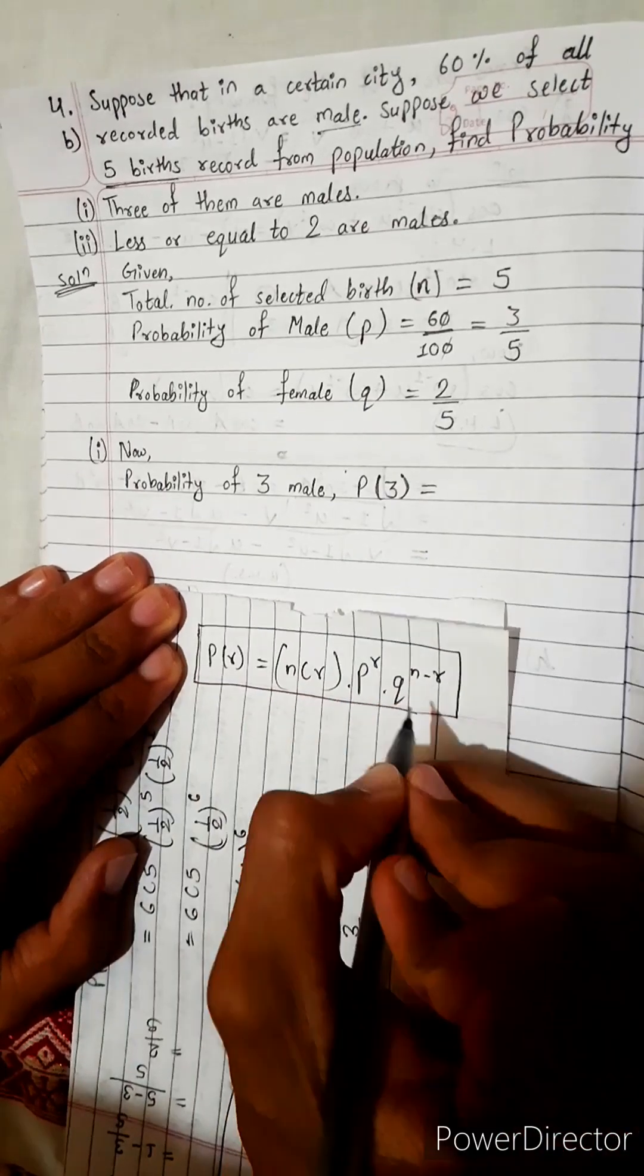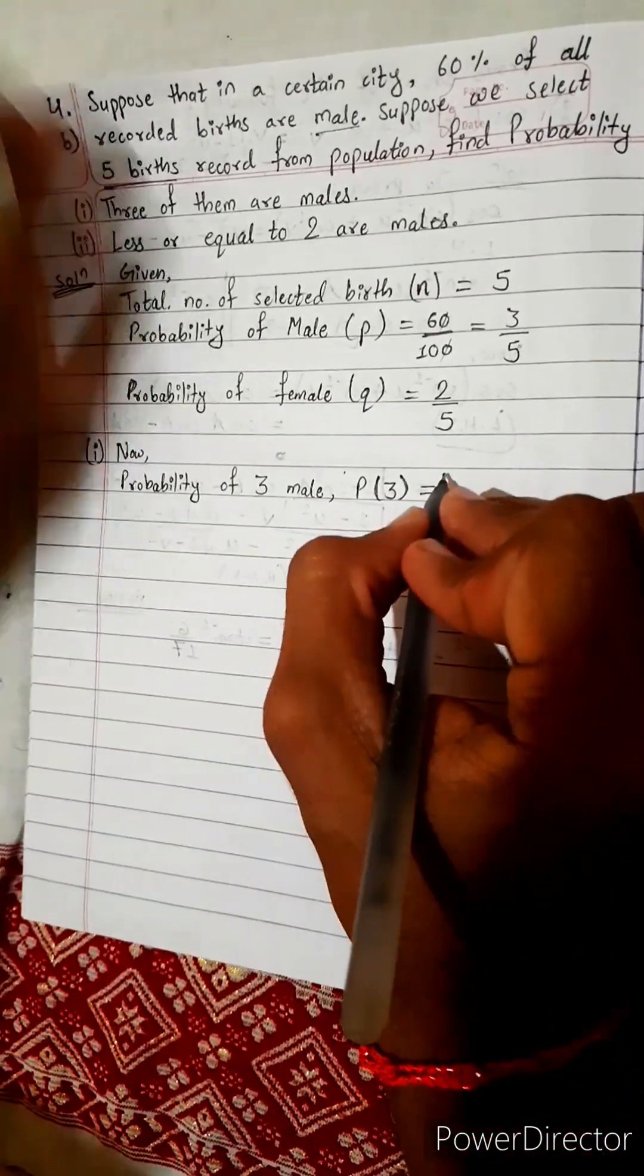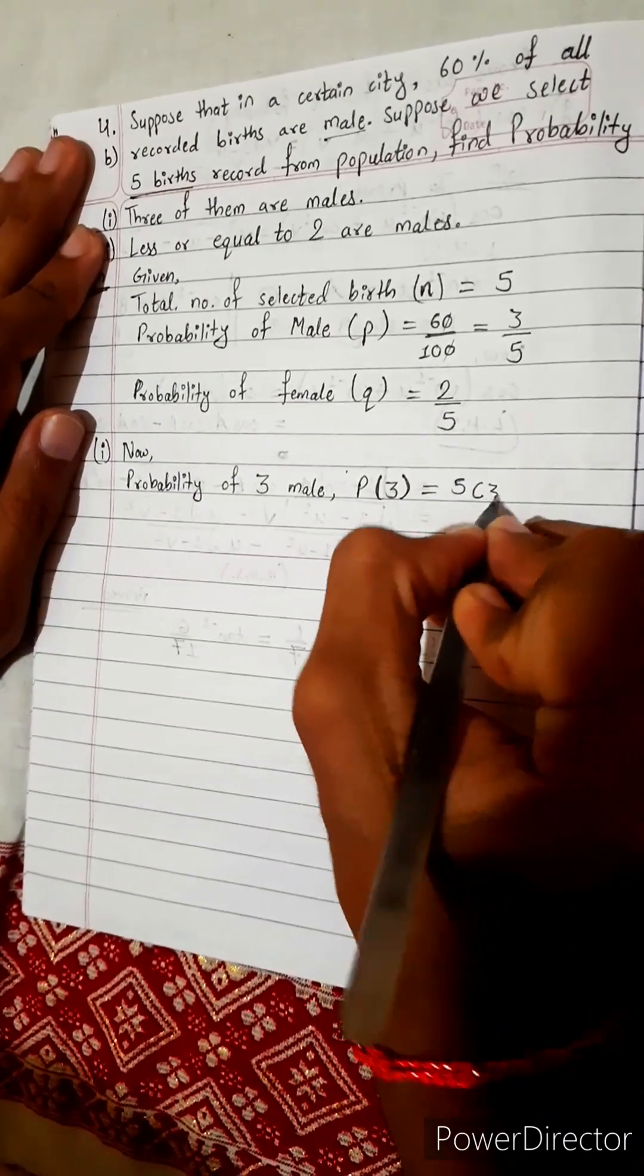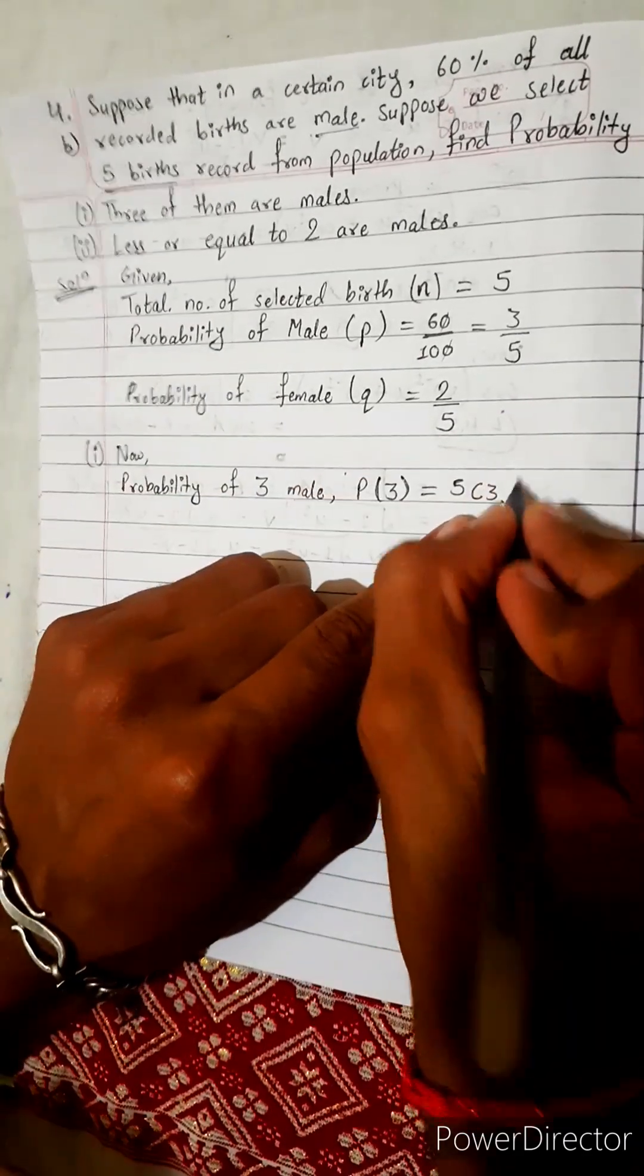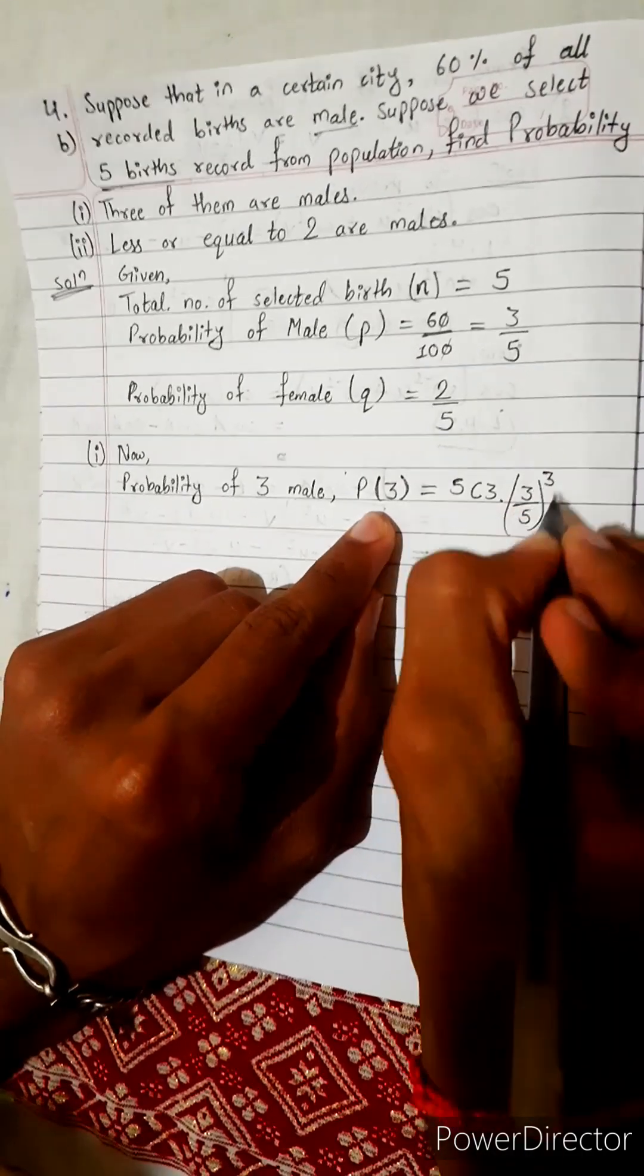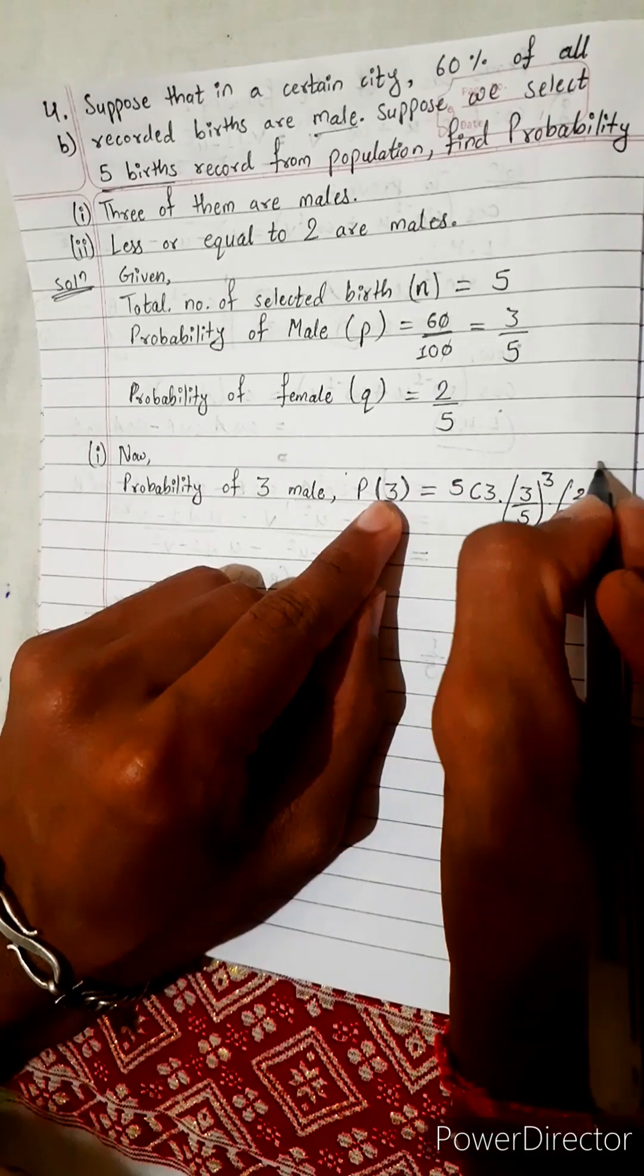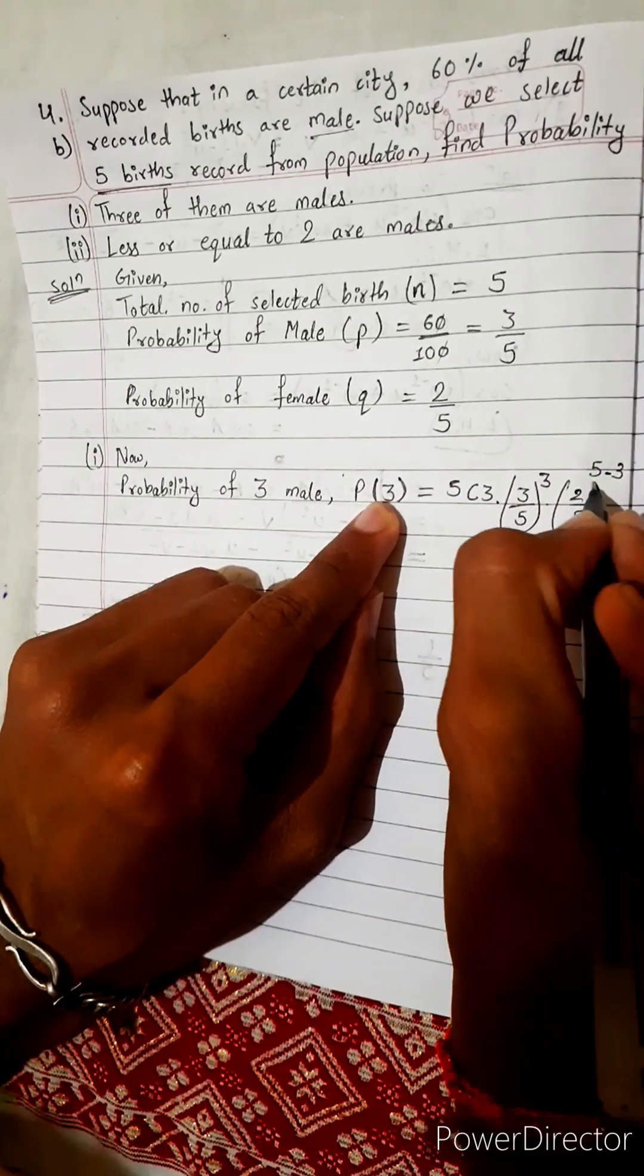This formula I have written many times, so I know this formula. 5C3, p is 3 by 5, power r, r is 3, q is 2 by 5, n minus r is 5 minus 3.